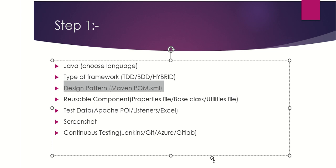The base class is responsible for loading configuration from the properties file and initializing the WebDriver with implicit wait. The utility file, util.java, stores and handles functions that are repetitive in nature, such as capturing screenshots, accessing data from Excel, sending emails, etc., which can be commonly used throughout the entire framework. For test data we use Apache POI to access data from Excel files.